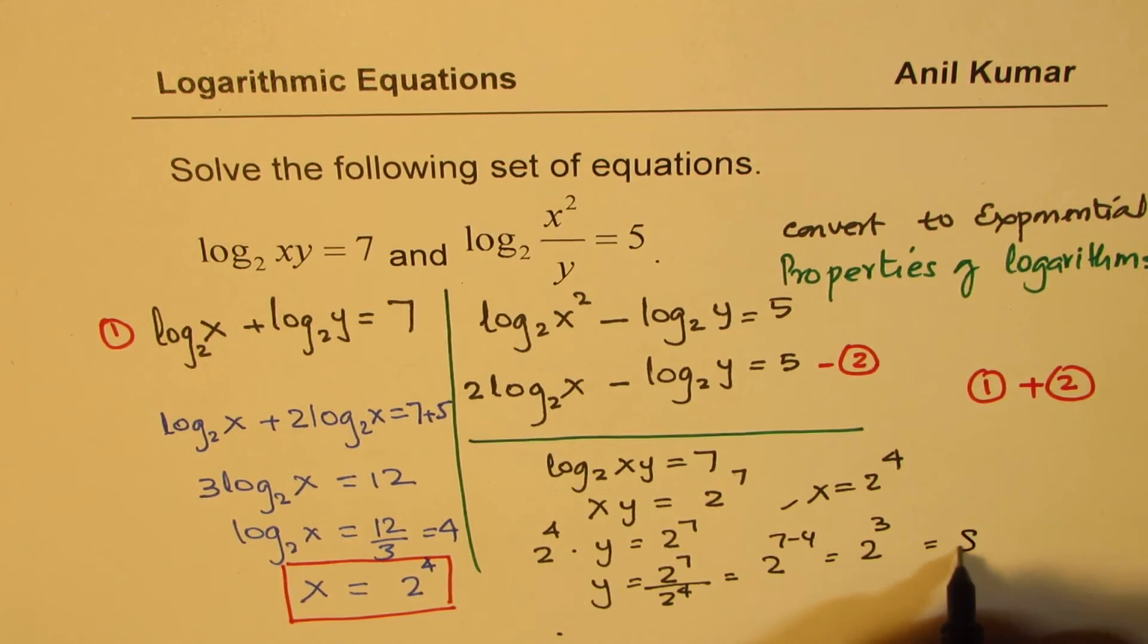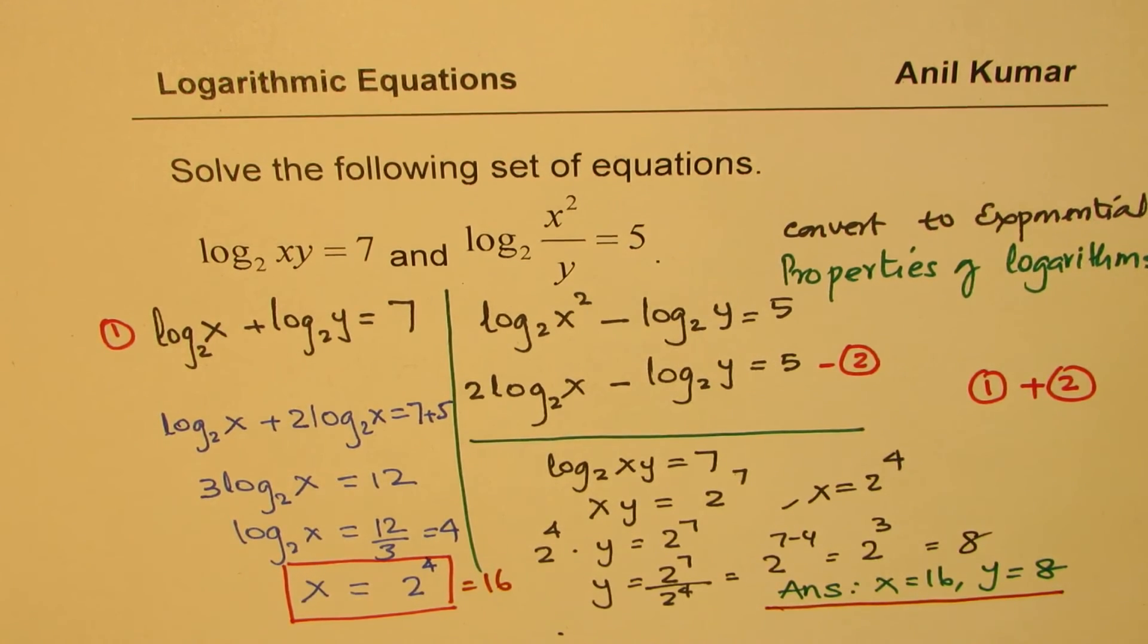So we get both the answers. x is 2 to the power of 4, y is 2 to the power of 3 which is 8. So our solution is, let me rewrite the answers here, x equals 16 and y equals 8. Because this is 16. So that is how we could actually solve the equation and get our answer.